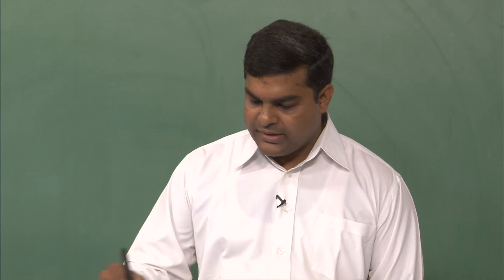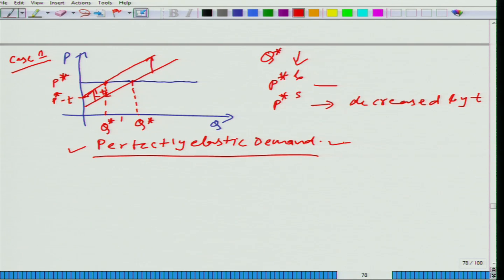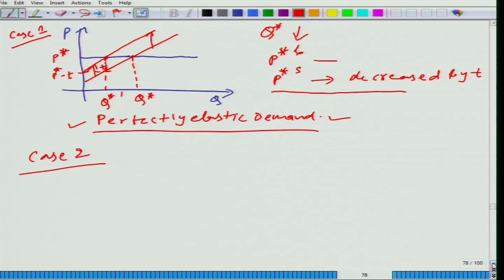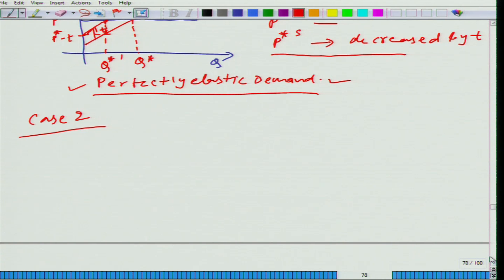So in case one, we discussed perfectly elastic demand and we saw that in this case the entire tax burden falls on the seller. Now we are talking about case two, when we have perfectly inelastic demand.